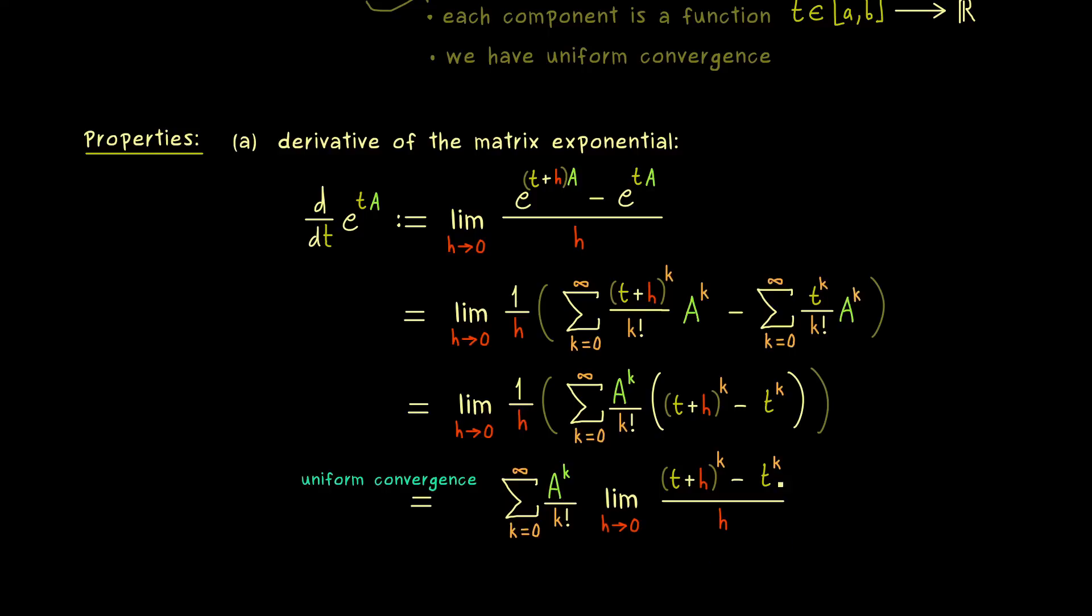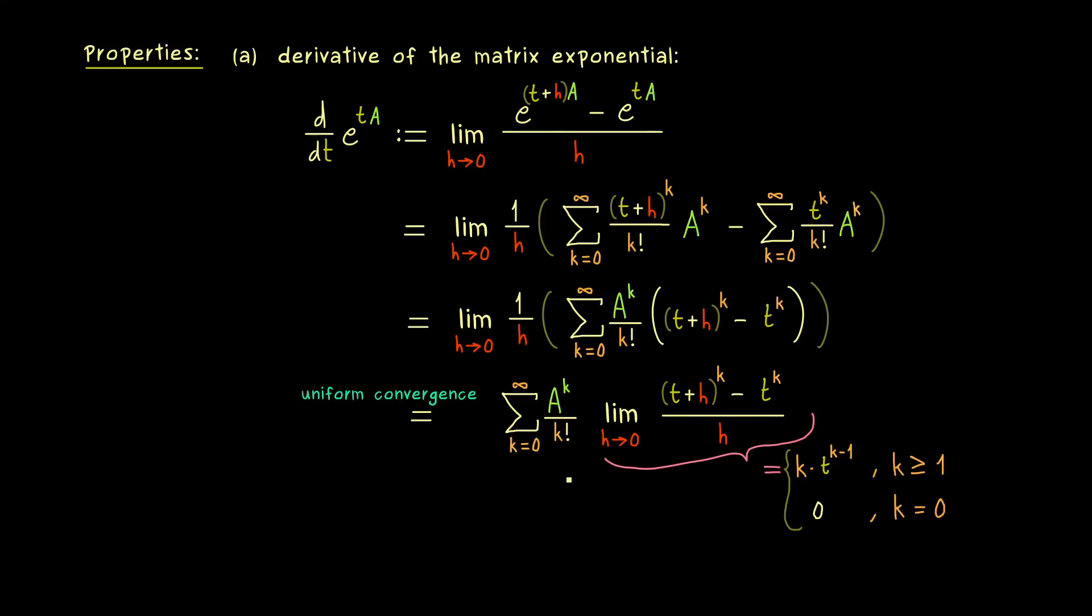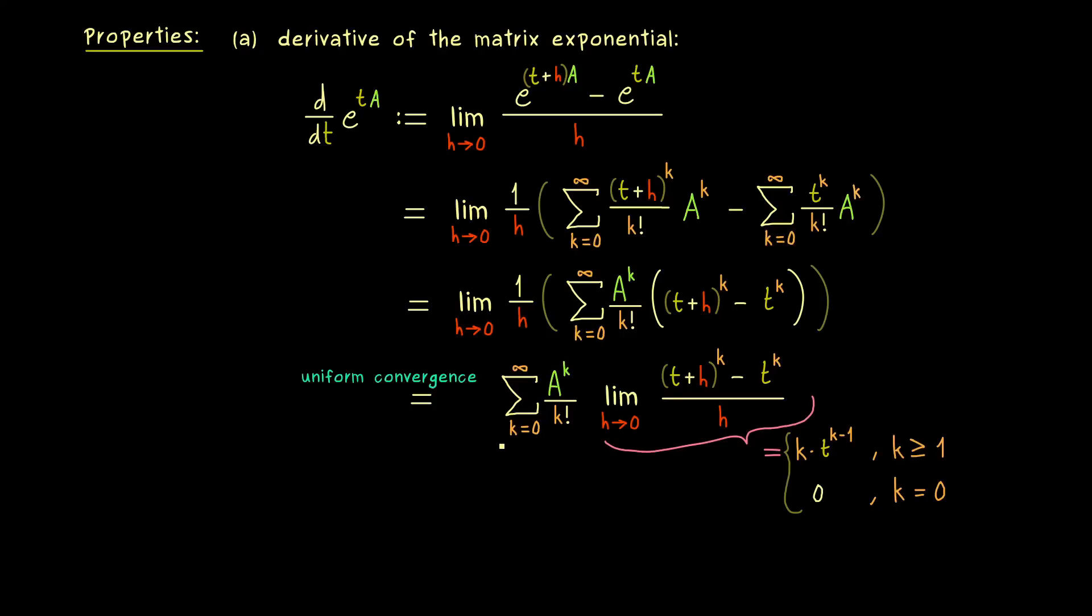And then the result we get here is really helpful because what we have is the derivative of a polynomial. In other words, something that is really easy to calculate. Indeed, you should know that the derivative of t to the power k is k times t to the power k minus 1. This formula is correct for every k except for the case where k is equal to 0. There we just have a constant which has derivative 0 anyway. And this implies that we can drop the case k equals 0 altogether and we can start the sum at k equals 1.